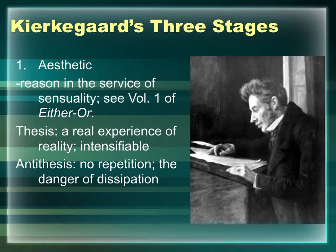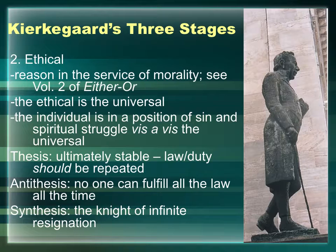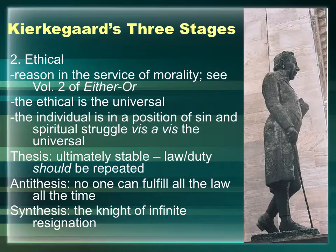The synthesis of the aesthetic stage is the next stage: the ethical stage. The ethical stage is reason in the service of morality, best represented by volume two of Either/Or — a series of letters written by Judge William (or Judge Wilhelm, depending on the translation) to the young man in volume one. Judge William is a judge, a representative of the ethical itself — law and duty. He's an older man, married, a pillar of society, the very model of the ethical stage. You might expect this to be a horrible text to read — an older man lecturing a younger one about pulling himself together.